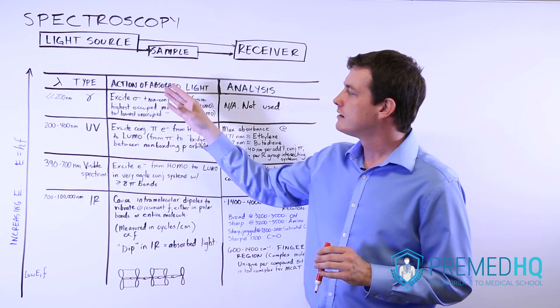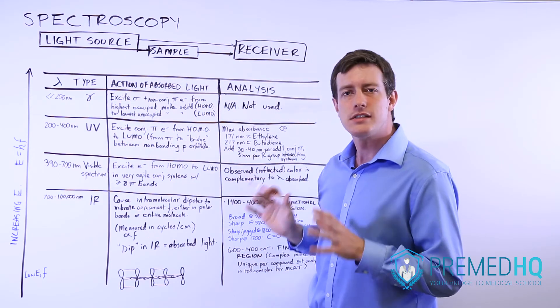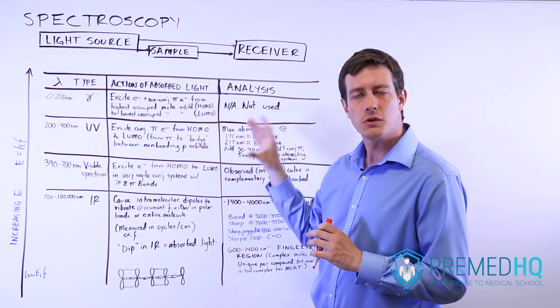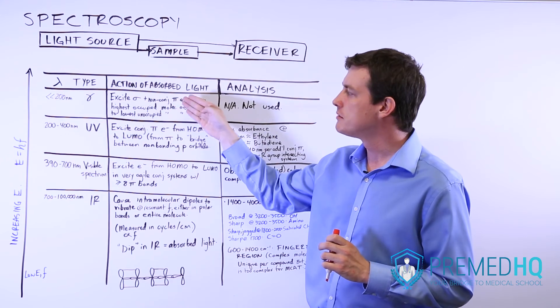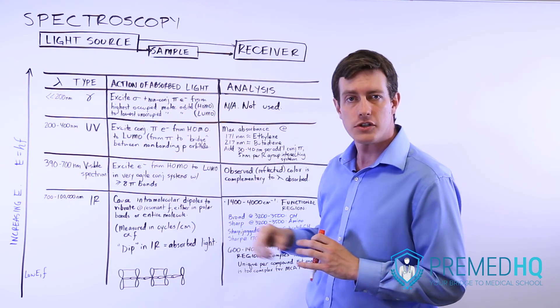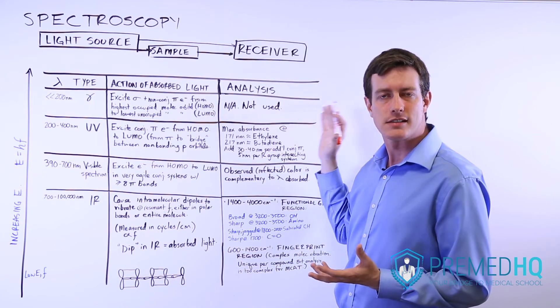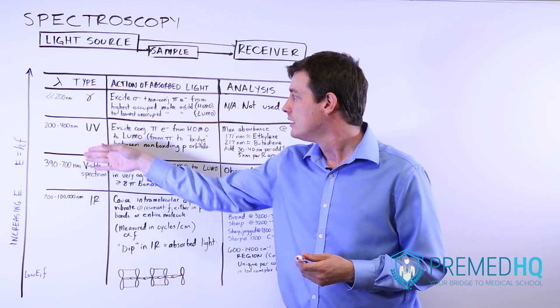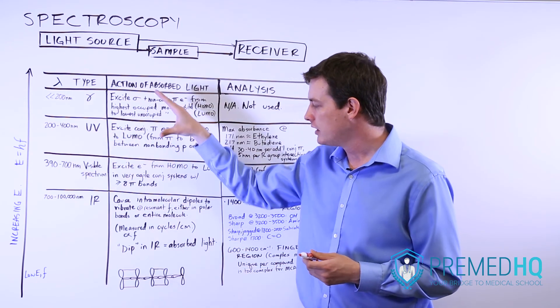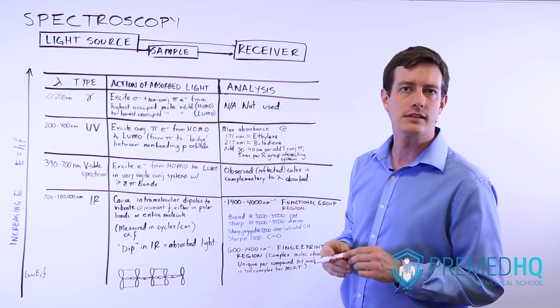Each of these wavelengths and energy levels tells us different things about the compound. We'll go through this table and we'll talk about what action is being performed by the light in order to be absorbed. Then we'll talk about how to analyze this and draw different conclusions, whether you're doing infrared spectroscopy, ultraviolet spectroscopy, or any of a number of different types of spectroscopy in your organic chemistry classes.